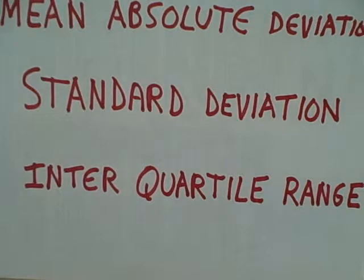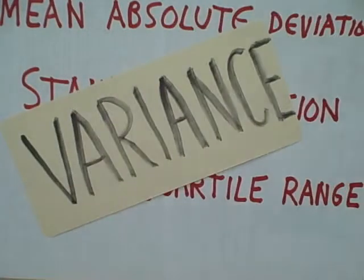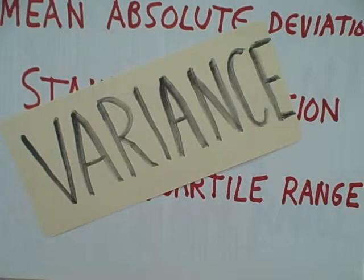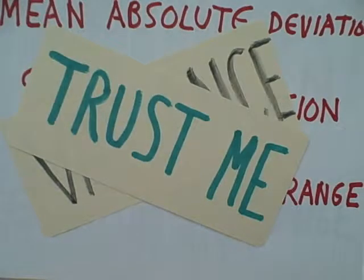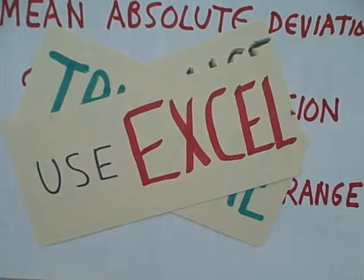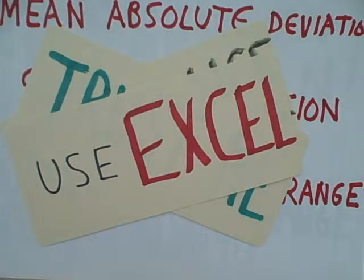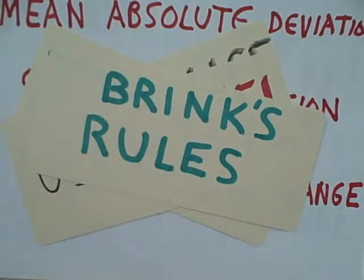Each of the measures we've talked about so far are going to be usually about half of the range — that's true for the mean absolute deviation, the standard deviation, and the interquartile range. The only measure of dispersion that does not follow this rule is the variance, and you have to square root that anyway in order to get the standard deviation. Trust me on this particular rule — it really helps avoid errors, and it even helps avoid data input errors when you use Excel. Having the maximum and minimum identified first is one of the best ways to see when you've entered a number that's ridiculously large or ridiculously small. Follow this one of Brink's rules and you will do a better job with your statistical calculations.